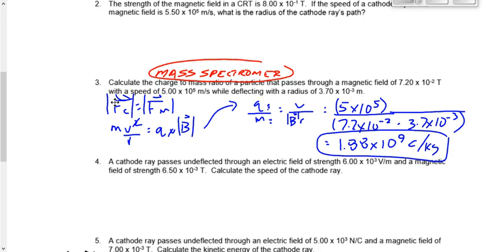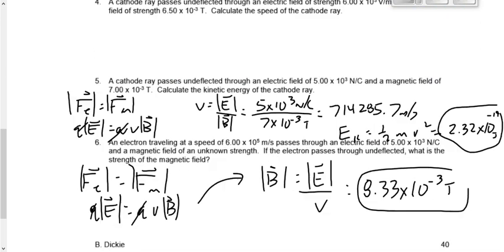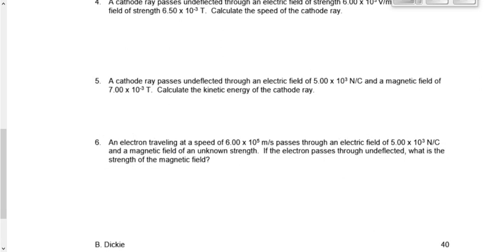All right, and number five. Five says a cathode ray passes undeflected through an electric field and a magnetic field. What's the kinetic energy of the cathode ray? Don't get caught up in the details like kinetic energy here. Okay, we've seen questions like this. Minus the kinetic energy thing. Let's say that if it's undeflected, this is... Which chamber is it? Rachel, which chamber is this if it's undeflected in an electric and magnetic field? Velocity selection. Good. It's the velocity selection chamber.